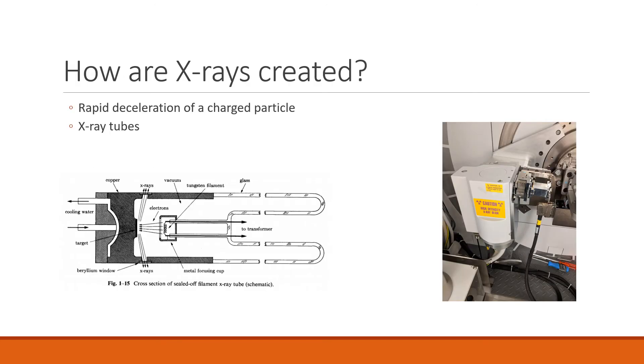So how are x-rays created physically? Generally, x-rays are produced when a charged particle such as an electron rapidly decelerates. This can be done in x-ray tubes, an example of which can be shown here. A high voltage makes electrons strike a target at high speed, and most of the energy is lost as heat, but some x-rays are produced at the point of impact.